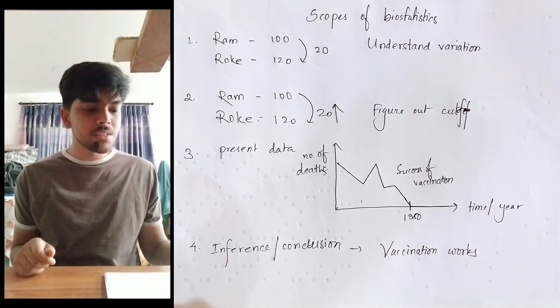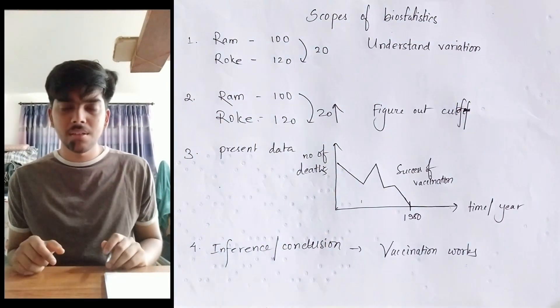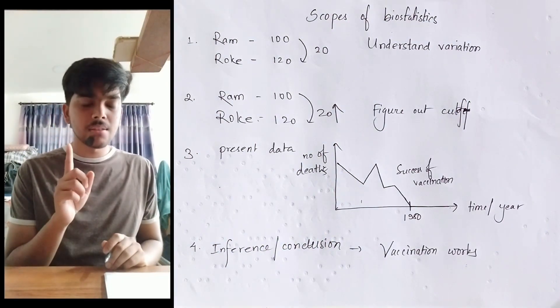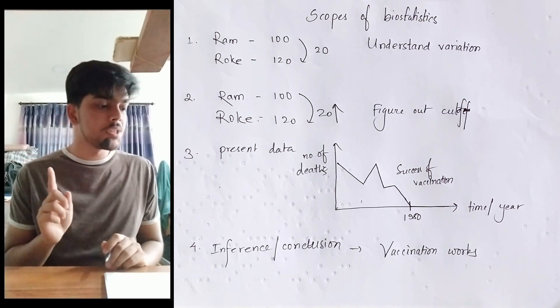And in order to understand this variation, you need biostatistics. So that's the first scope of biostatistics - to understand variation.